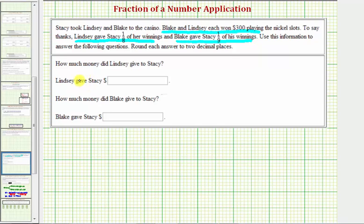So to determine how much money Lindsey gave to Stacy, we need to find 1/8 of $300. And to determine how much money Blake gave to Stacy, we need to determine what is 1/9 of $300.